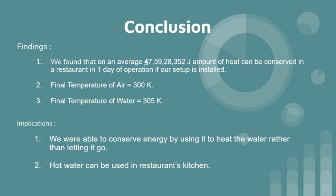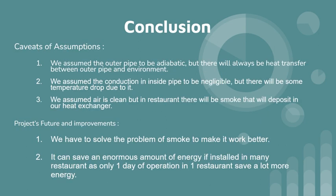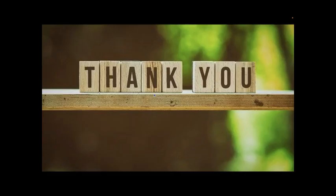So as for the conclusion, we found that on an average, 4.7 times 10 to the power 8 amount of heat can be conserved in a restaurant in only a single day of operation if our setup is installed. So we were able to use the hot air to heat the water, and therefore we conserve energy, because now the hot water can be used in the restaurant. What are the limitations of our assumptions? We assumed that the outer pipe to be adiabatic, but there will always be heat transfer between outer pipe and environment. We assumed the conduction in the inside pipe to be negligible, but there will be some temperature drop due to it. We assumed air is clean, but in a restaurant there will be smoke that will deposit in our heat exchanger. So we have to solve the problem of smoke to make it work better. So in future, we are aiming to do something about the deposition of the particles in our heat exchangers, and we aim to save an enormous amount of heat energy. I hope you liked this. Thank you.